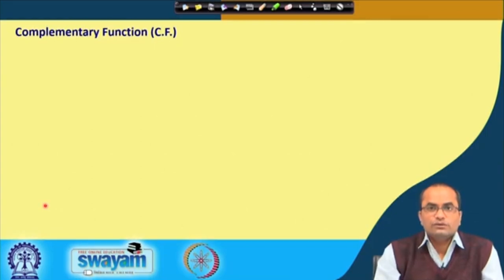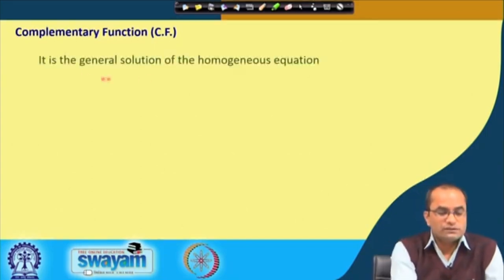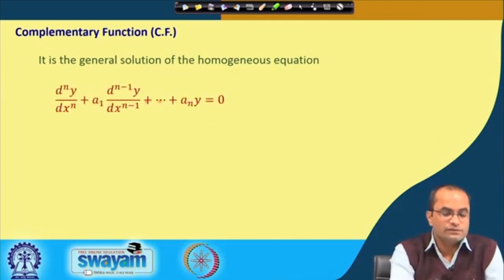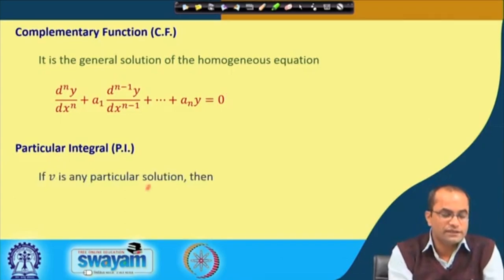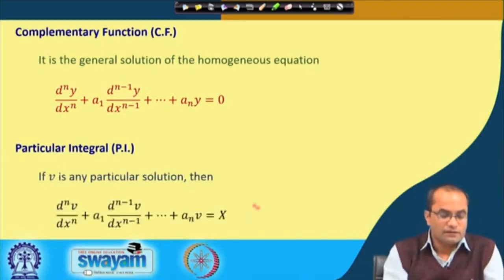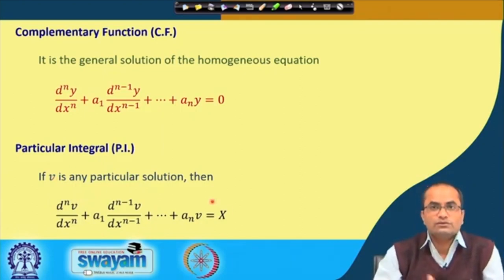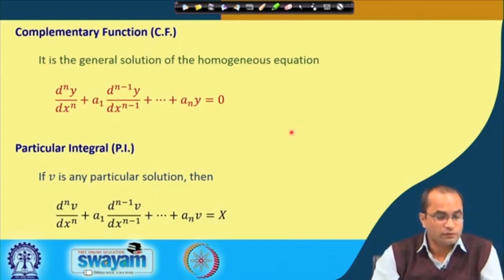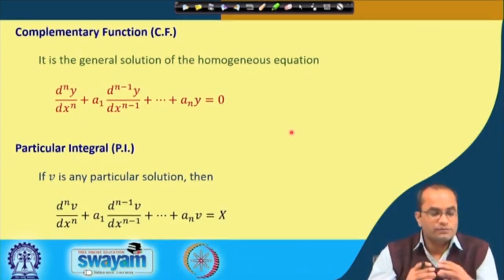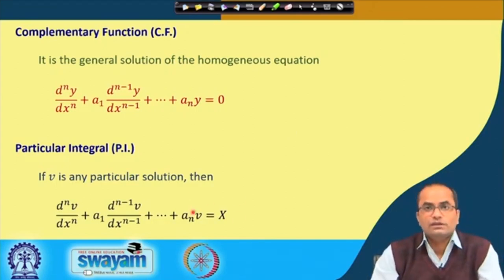The complementary function is the general solution of the homogeneous equation, and the particular integral is one particular solution satisfying the given differential equation — meaning if v is any particular solution, substituting v into the left-hand side should give the right-hand side x. We will prove later that when we add the complementary function and the particular integral, we get the general solution of the given non-homogeneous differential equation.